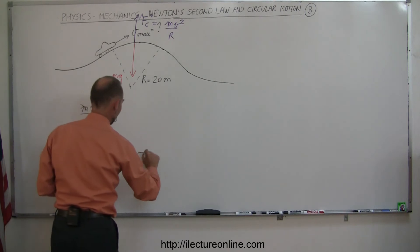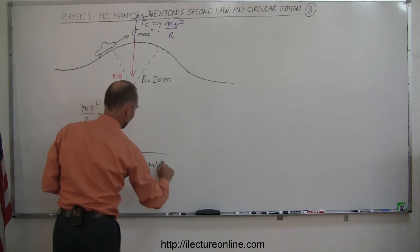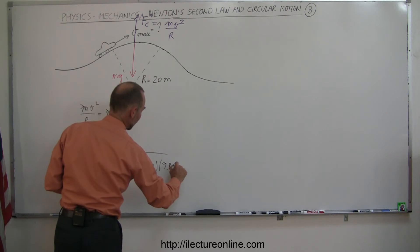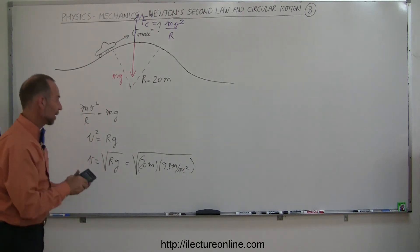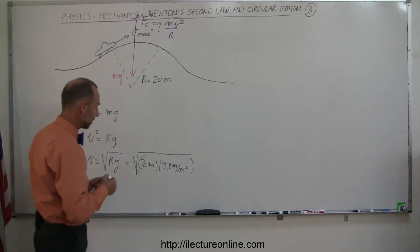If the radius is 20 meters and g is 9.8 meters per second squared, let's find out how fast you can go over this hill before you go airborne. That would be 20 times 9.8 and take the square root: 14 meters per second.